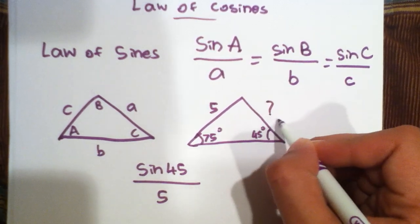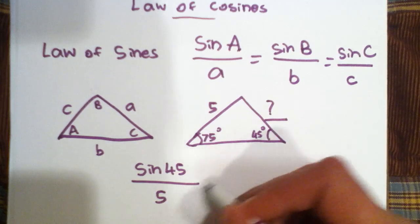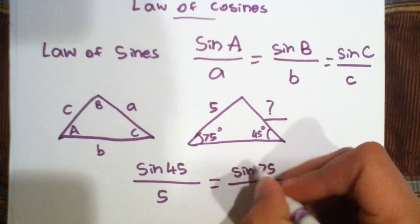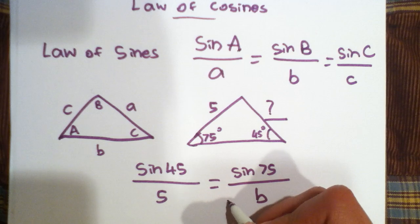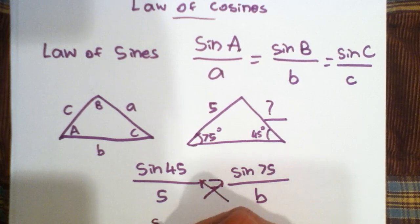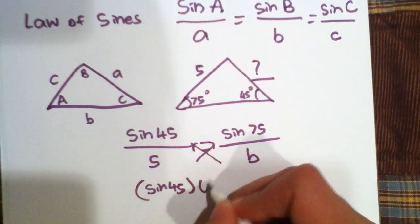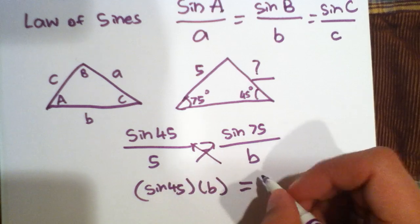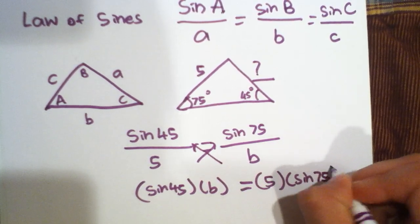So, what is the value of that? We start by writing sine forty-five over five is equal to sine seventy-five over B. And we cross multiply. So, we get sine forty-five times B is equal to five times sine seventy-five.